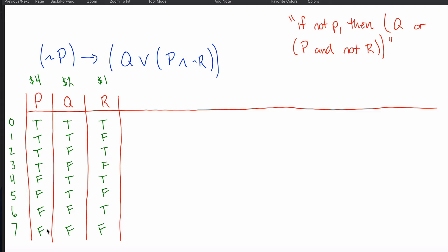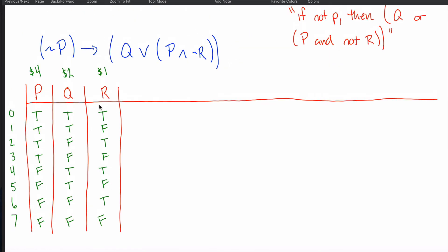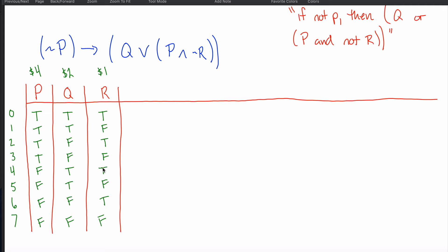Once you reach F's everywhere you know you're done. If you don't like that method, and you have the two-variable four-row pattern memorized, you might notice there's a copy of that pattern in the top half and another copy in the bottom half. Fill out that square twice, putting all T's to the left in the first copy and all F's to the left in the second copy. Whatever method gets you to this stage works.